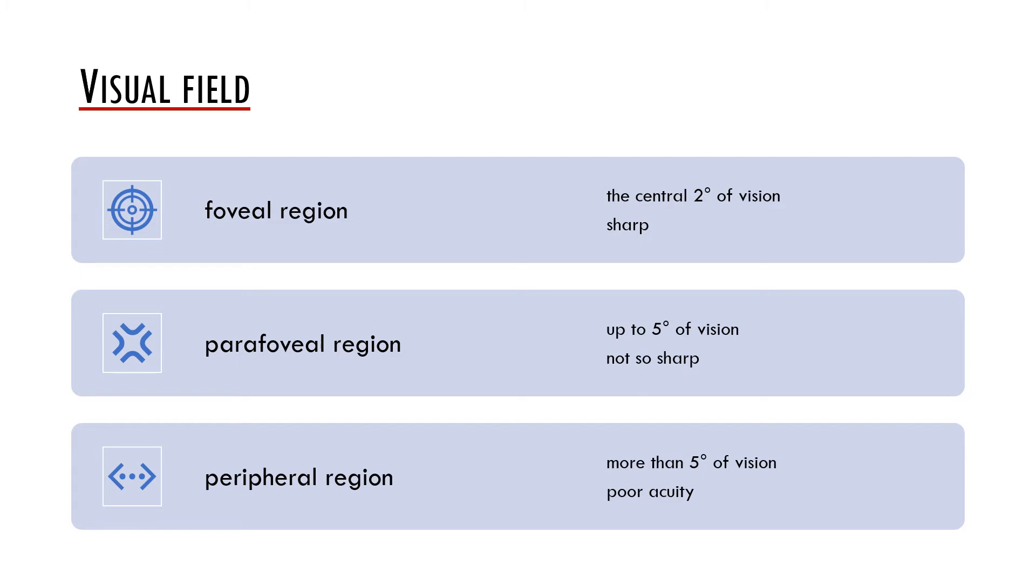The parafoveal region is defined as the region ranging from the foveal region up to five degrees of visual angle from fixation and it is related to a less sharp vision. However, it could play a role in reading. More than five degrees of visual angle are considered as peripheral region which may be useful for certain cognitive processes but not for reading.